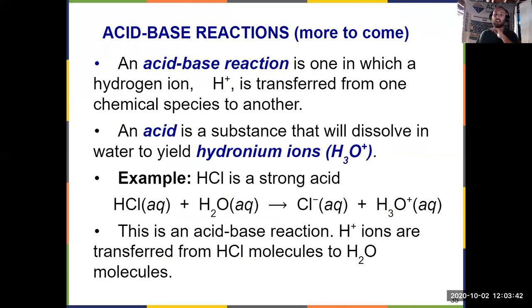Our second is an acid base reaction. We've already seen acids in chapter two. We see them again in chapter four. We'll talk about them a little bit later on in the semester. And then in Gen Chem 2, we'll spend a whole chapter talking about acids and bases. Right now, we just need to know the basic definition of an acid base reaction. And that's where we take a hydrogen ion, so H+, hydrogen with a plus one charge, and we transfer it from one chemical species to another.